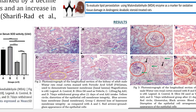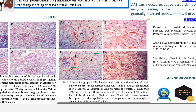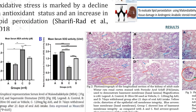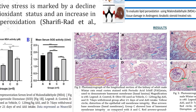H&E staining shows an intact glomerulus in both control groups, but in the AAS-treated group we can see vacuolation and fragmentation of the glomerulus, and degeneration within the glomerular epithelium of the renal tubule. In the withdrawal group, we can see gradual regeneration of the cells, because withdrawal of the anabolic androgenic steroids allows the ubiquitous antioxidant system to increase its production while mopping out reactive oxygen species produced by anabolic androgenic steroids.